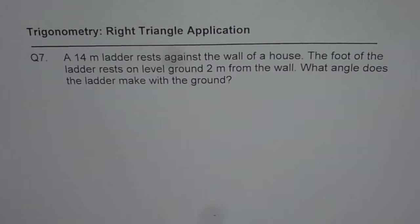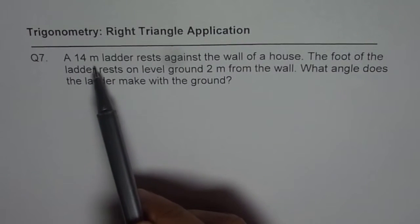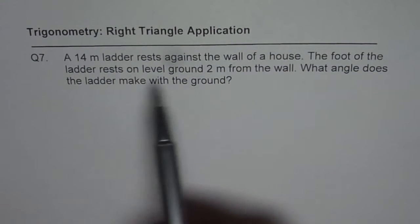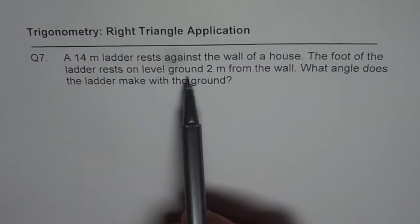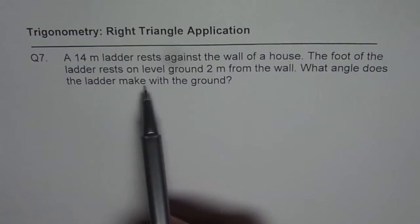I am Anil Kumar and here is a very popular question which can be solved using trigonometry. The question is: a 14 meter ladder rests against a wall of a house. The foot of the ladder rests on level ground 2 meters from the wall. What angle does the ladder make with the ground?